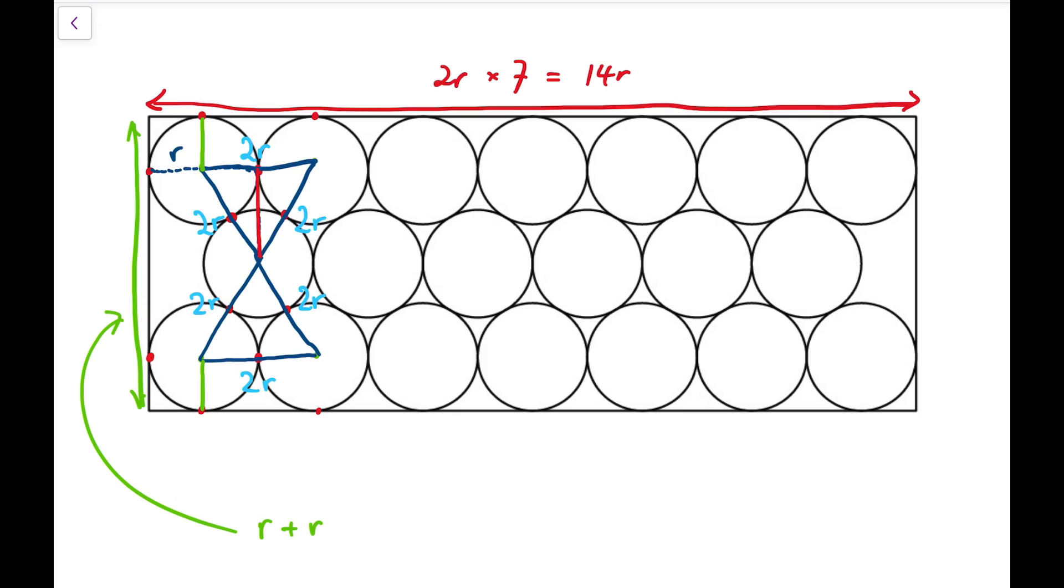Notice that because we have equilateral triangles, the height perpendicular to one of the sides, and all angles in an equilateral triangle is 60 degrees. So that means the height of one equilateral triangle should be 2R multiplied by sine 60 degrees. And because I have two equilateral triangles, I'm going to multiply that by 2. So I've managed to express the length of the green side in terms of R.